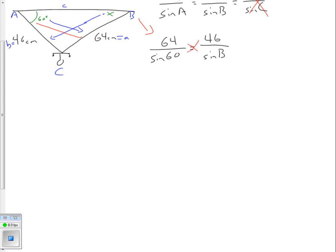We're going to multiply 64 times sin B, and we're going to multiply 46 times sin 60. So we end up with 46 times sin 60° equals 64 times sin B. Now the term with the variable in it is sin B. I'm trying to get this piece all by itself. Right now sin B is being multiplied by 64, so I'm going to divide both sides by 64.